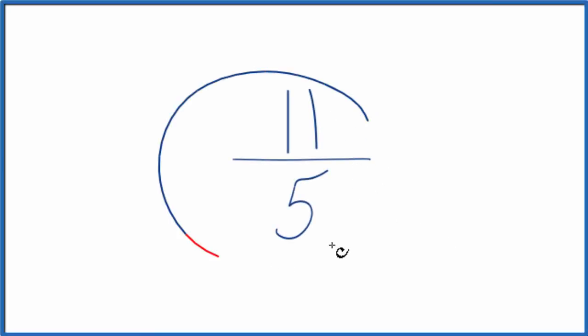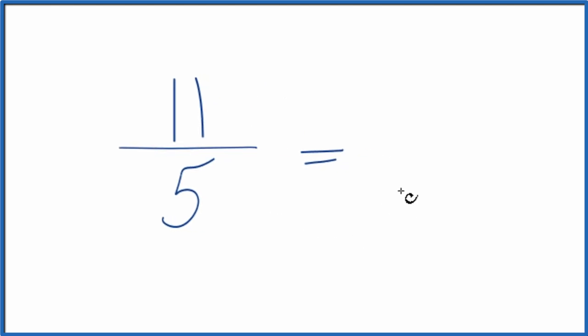Let's simplify the fraction 11 fifths. Here's how you do it. We're trying to find another fraction that's equal to, has the same value as 11 over 5, just simplified or reduced down to its simplest terms.